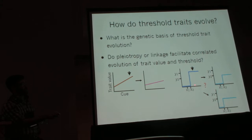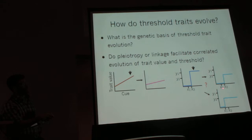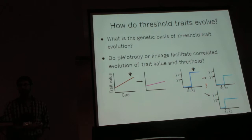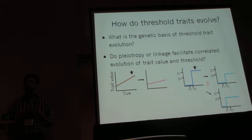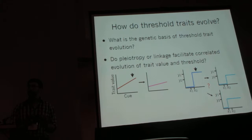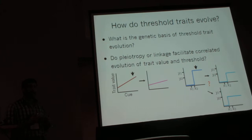However, for a threshold trait, it's not clear that if you have selection on the value of the induced phenotype — on the y-axis — that should also necessarily result in a change on the x-axis in the threshold that determines whether or not it's expressed. And this is more than a basic quantitative genetics question; it's something that has real ecological implications, because if these two parameters of the reaction norm are free to evolve independently, that allows local adaptation to be really fine-tuned to the environment.